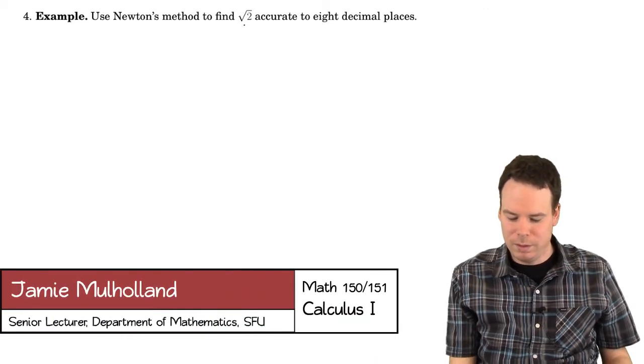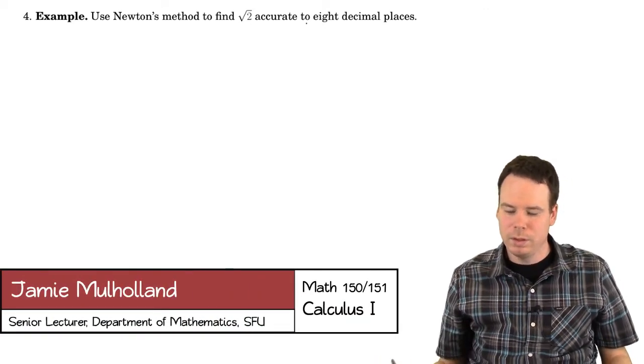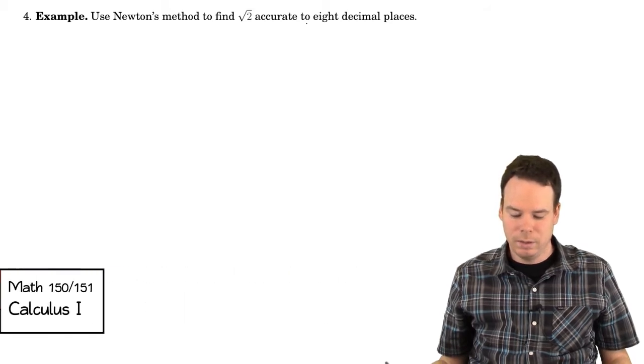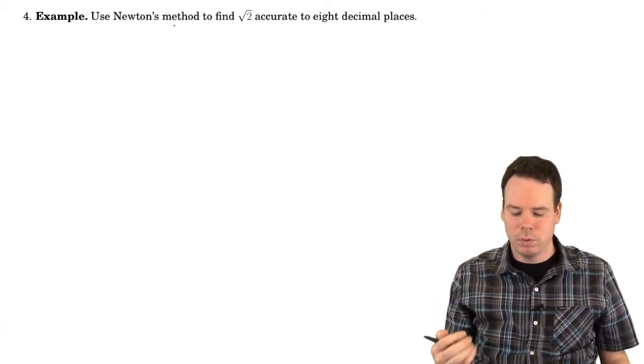Okay, in this next example let's use Newton's method to find the square root of 2 to 8 decimal places. Again, the thing to note is Newton's method applies to finding roots of functions.